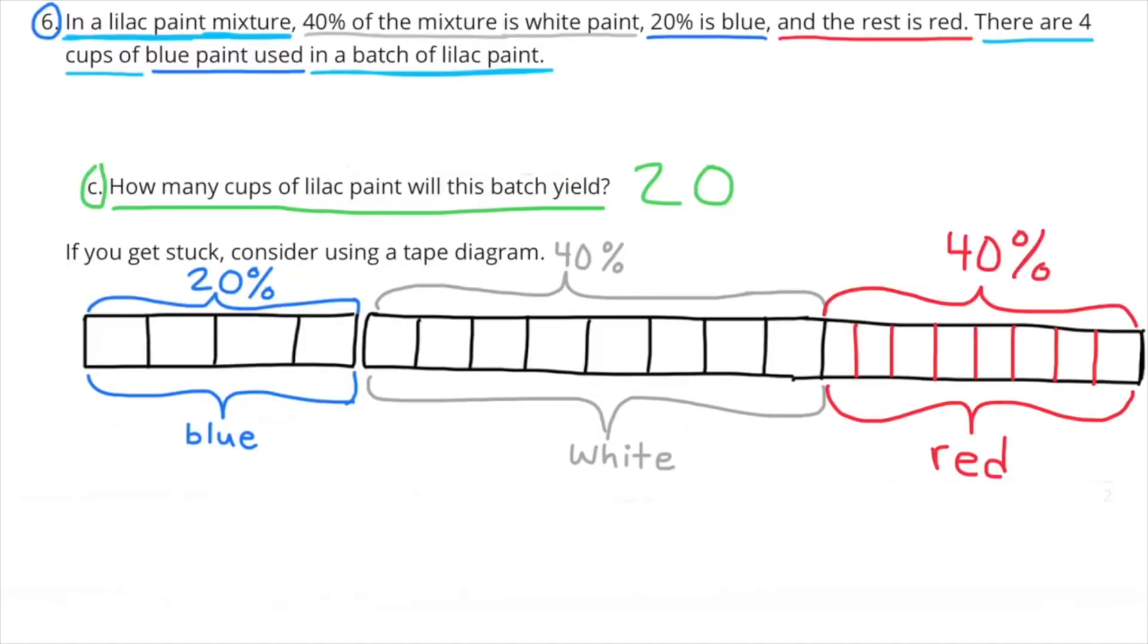C: How many cups of lilac paint will this batch yield? Well, if we count up all of the cups, we have 4 cups, plus 8 cups, plus 8 cups, and that totals 20 cups. This batch of lilac paint will yield 20 cups of paint.